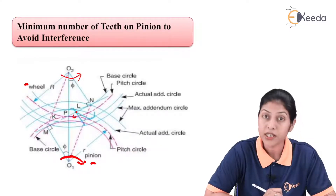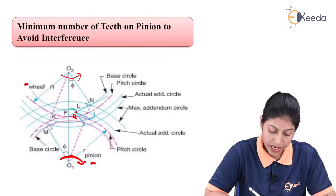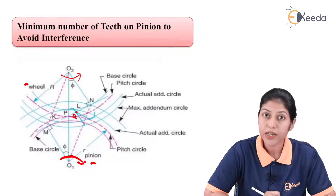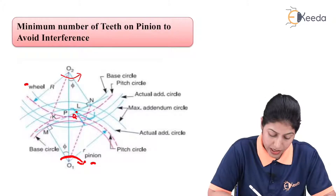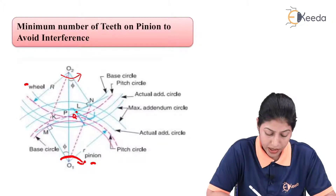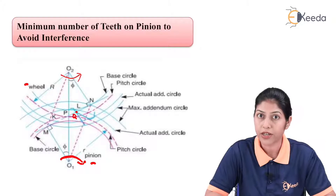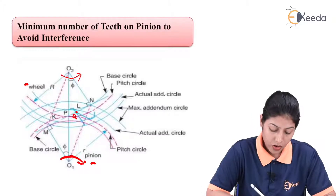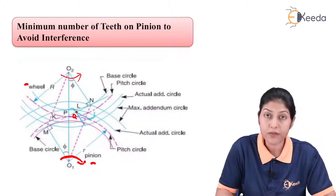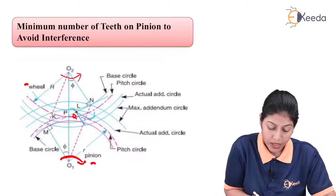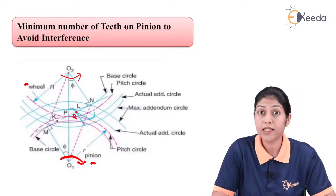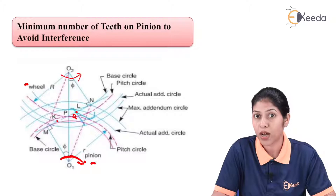Let us consider this contact point as Q. The line mn acts as the normal over this point Q, representing the normal over the involute curve passing through Q. On the basis of mn and the radii of the addendum circles of the wheel and pinion, we can define the actual length of path of contact.